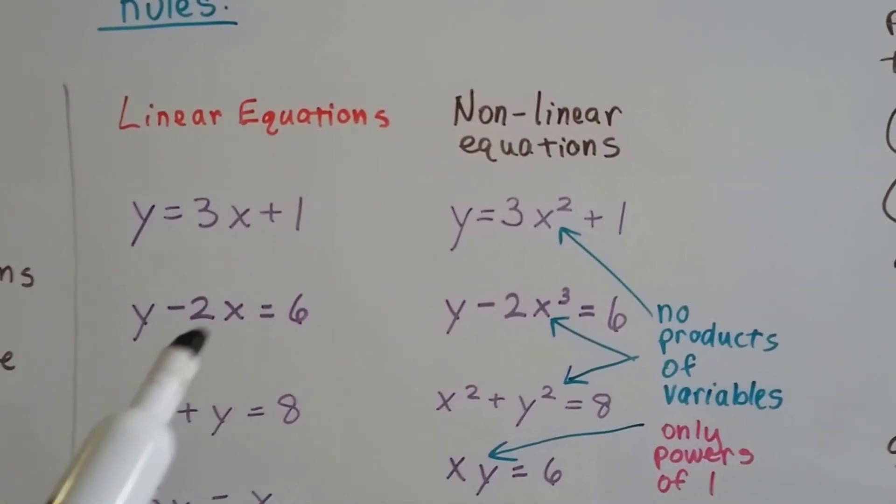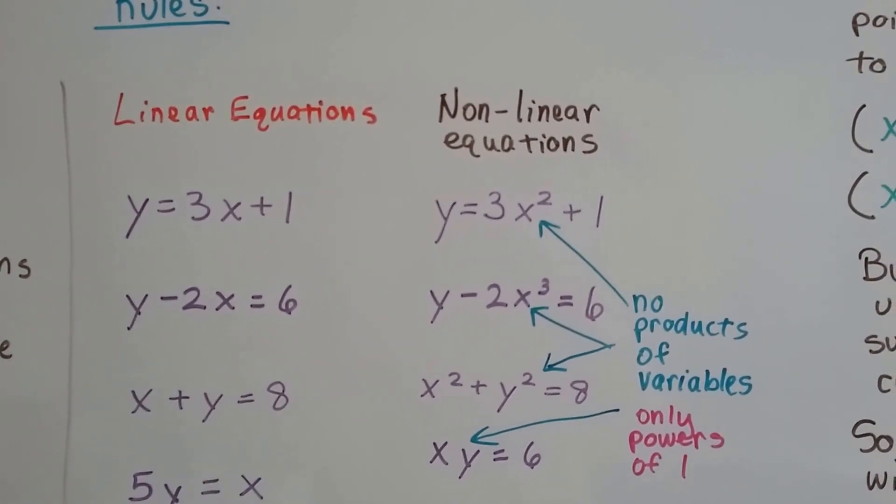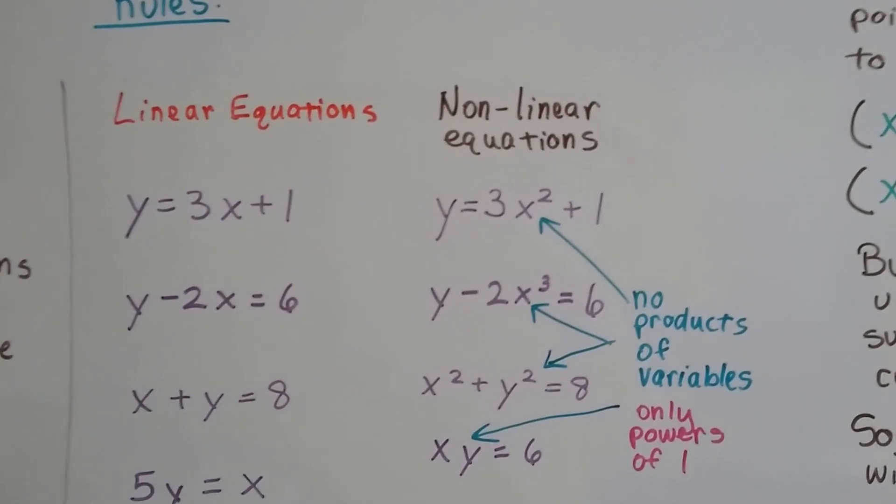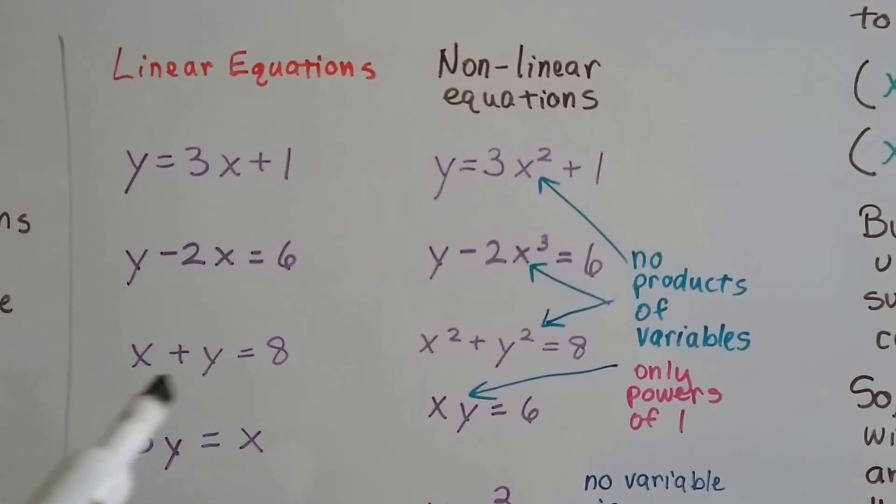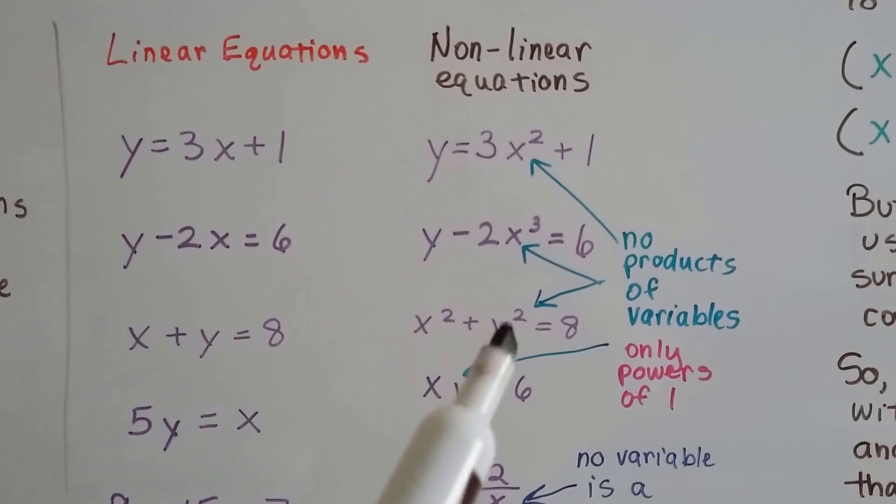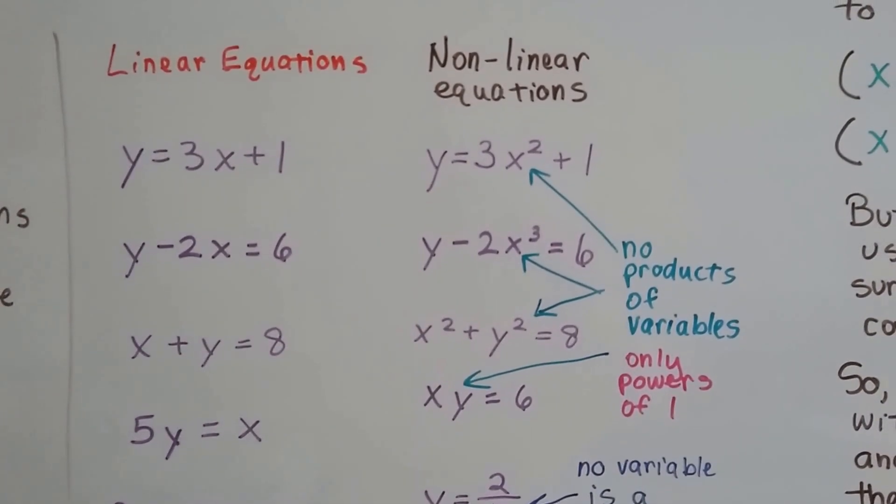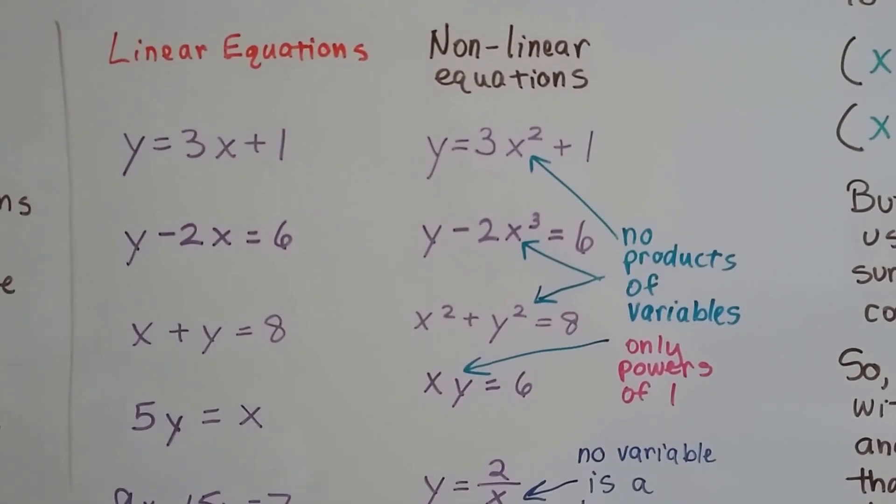If we have y minus 2x equals 6, we got the two variables here, that's linear. But if we put an exponent up there, that means x times x times x, that's a product of variables. x plus y equals 8 is okay, that's linear. But x squared plus y squared equals 8 is not, because those are products of variables. The power can only be a 1, it can't be a 2 or a 3 or bigger. And it can't be a negative either.